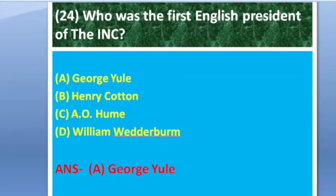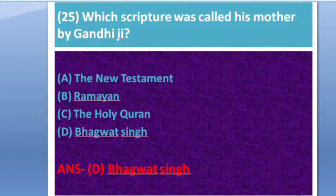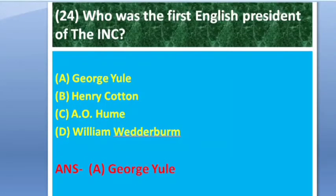Next question: Who was the first English President of the Indian National Congress? Options: A — George Yule, B — Henry Cotton, C — A.O. Hume, D — William Wedderburn. The answer is option A.